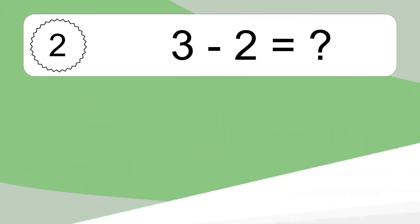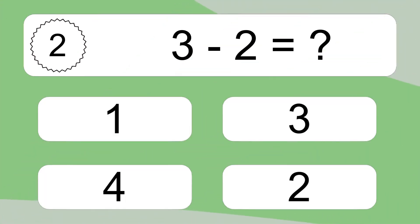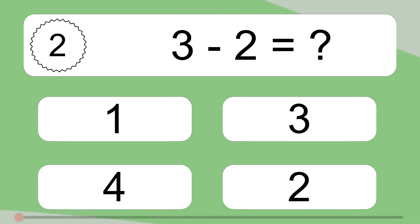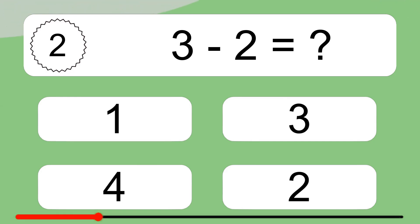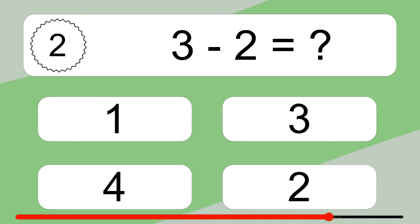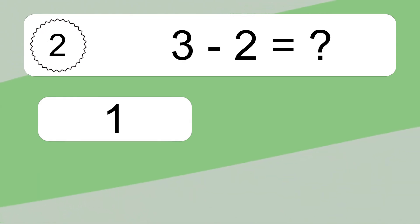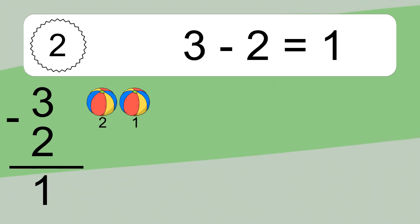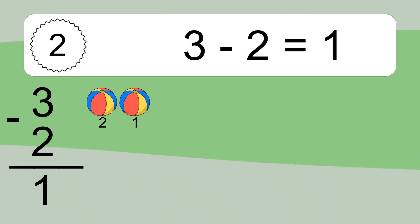3 minus 2 equals what? 3 minus 2 equals 1. Let's count it: 2, 1.